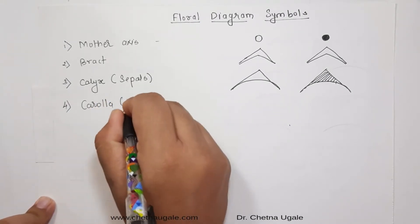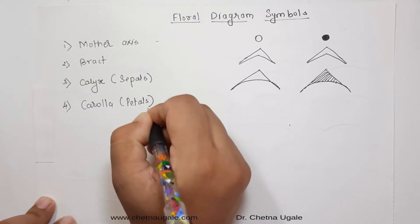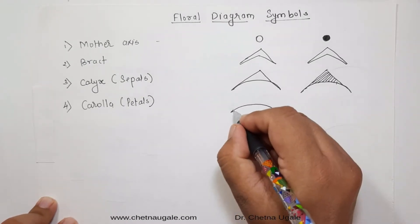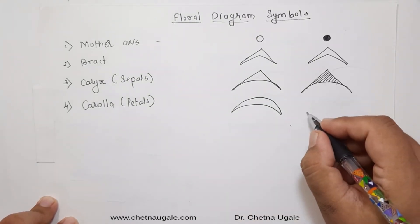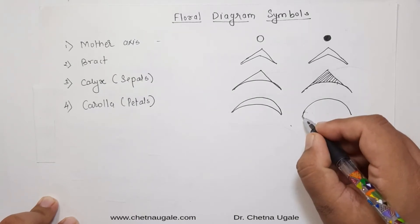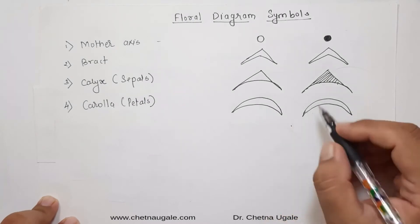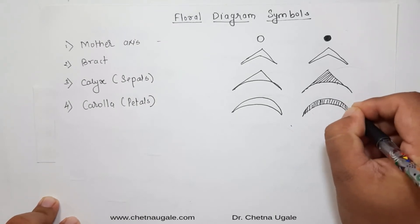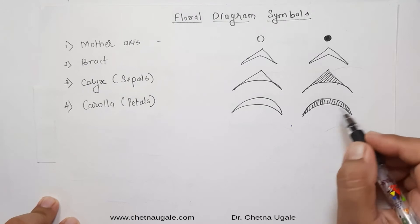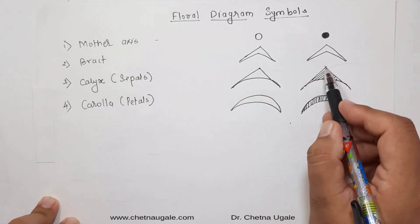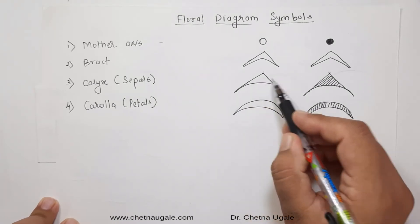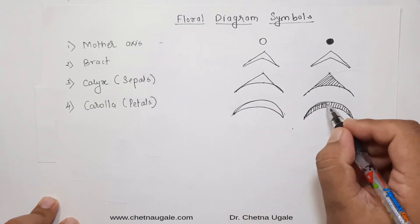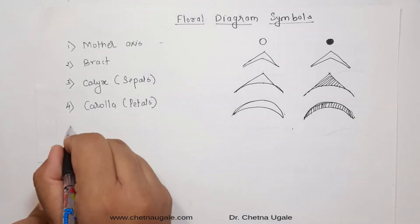The next one is the corolla. The corolla is the second non-essential floral whorl, composed of petals. Individual petals are represented by a circular or semi-circular shape. Sometimes the shape is hollow, sometimes filled or filled with lines. Generally, a circular shape represents the androecium, while a directly circular shape represents petals.